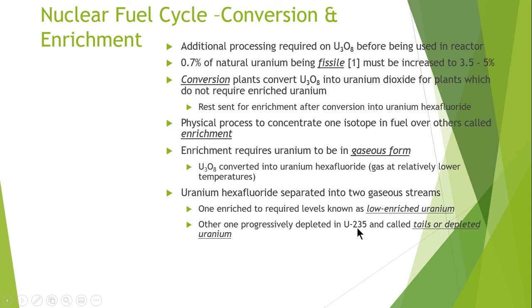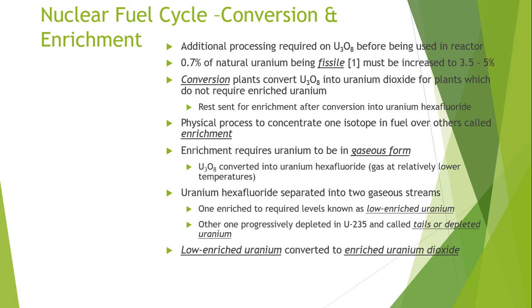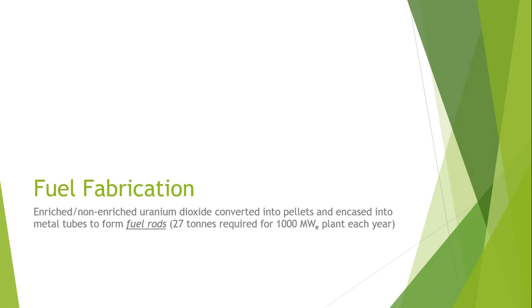The stream depleted in U-235 is called tails or depleted uranium. The lower enriched uranium is then converted into enriched uranium dioxide so that it can be used effectively in nuclear reactors. In fuel fabrication, enriched and non-enriched uranium dioxide is converted into pellets and encased into metal tubes, which are known as fuel rods.